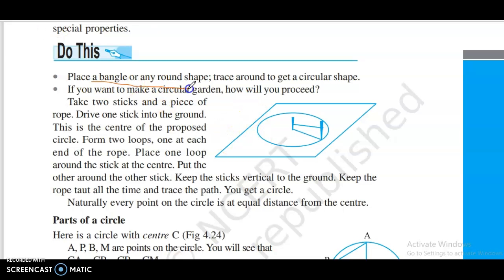Circles. It is a bangle, any round shape. Trace around to its shape. If we want to make such a circle, how will you proceed? Here, take a stick and a piece of rope. Fix one stick to the ground where you want the center.